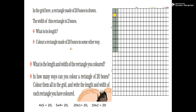How many boxes? 1, 2, 3, 4, 5, 6, 7, 8, 9, 10 — 10 boxes of length and 2 boxes of width. 10×2=20 boxes. The width of this rectangle is 2 boxes and the length is 10 boxes. Color a rectangle made of 20 boxes in some other way.